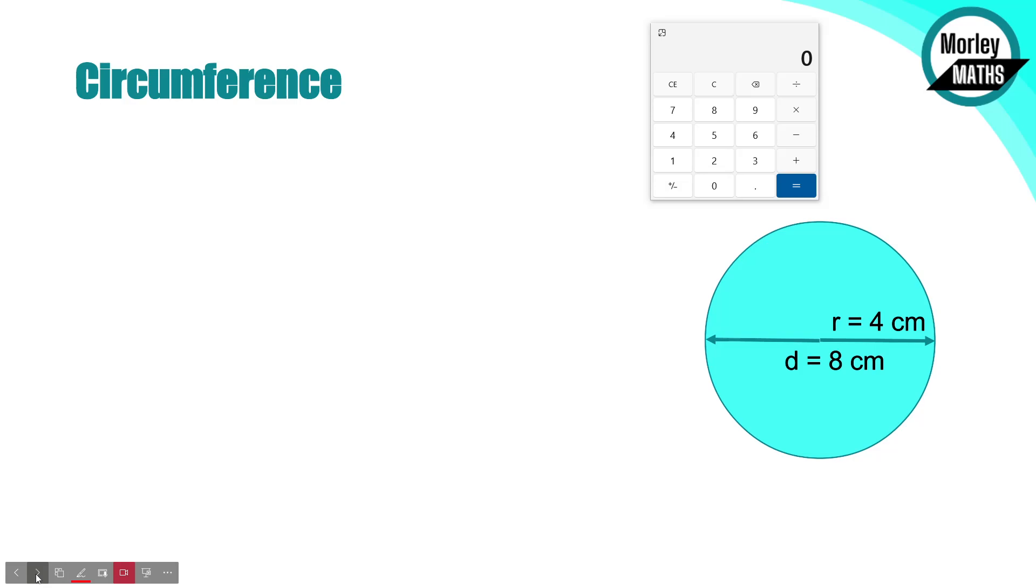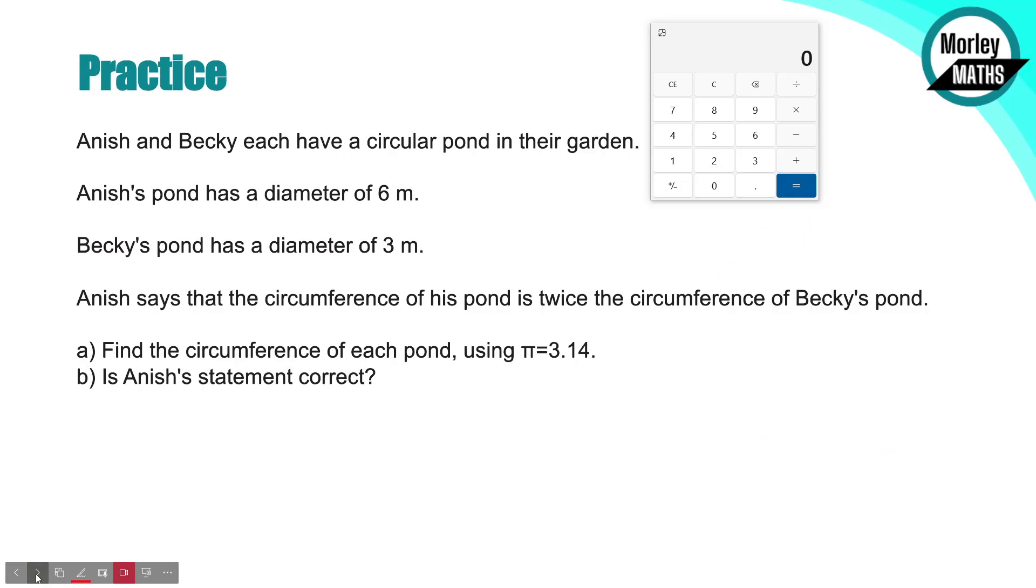Hopefully that made sense. If you've got any comments or questions, do let me know in the comments section. Now you've got this practice question here from an NCFE exam. Anish and Becky each have a circular pond in their garden. Anish's pond has a diameter of 6 meters. Becky's pond has a diameter of 3 meters. Anish says that the circumference of the pond is twice the circumference of Becky's pond. Find the circumference of each pond using pi as 3.14. Is Anish's statement correct? Pause the video and have a little go at this question.